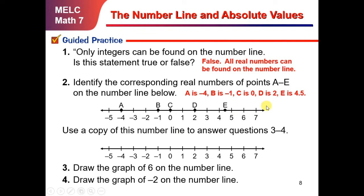Number 3: Draw the graph of 6 on the number line. We have this number line and we will now graph 6. Since 6 is a positive number, this is where our 6 will be located. Number 4: Draw the graph of negative 2 on the number line. Negative 2 is on the left side of 0, so therefore, we have our coordinate on that point.